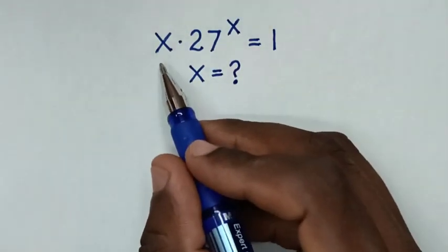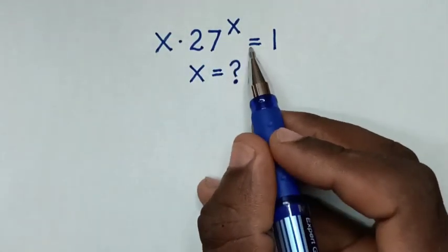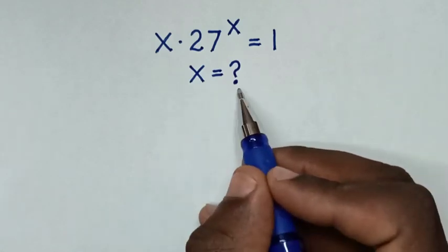Hello! How to solve x times 27 to the power of x equals 1 to find the value of x.